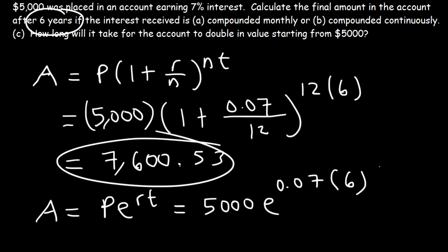So it's 5,000. E raised to 0.07 times 6. And this is equal to $7,609.81. So it's very close to this answer, but when it's compounded continuously, the amounts should be a little bit higher.